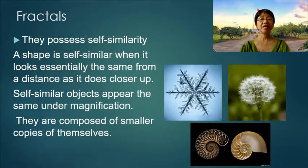They possess self-similarity. A shape is self-similar when it looks essentially the same from a distance as it does closer up. Self-similar objects appear the same under magnification. They are composed of smaller copies of themselves.